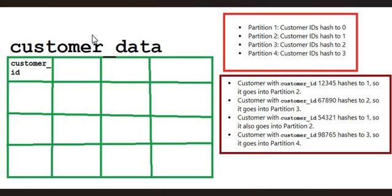What I mean is that because a hash function is applied on a specific customer_ID, every time you apply the hash function on an ID, there will be some output. That output may not be unique like the ID — it can be the same for multiple customers. So for a few customers, when you apply the hash function, the output might be one, and all of these go to partition number two. When a new customer record is inserted into the customer_data table, the hash partitioning mechanism applies the hash function to customer_ID to determine which partition the record should be placed in. This method is very useful when there are large volumes of data.